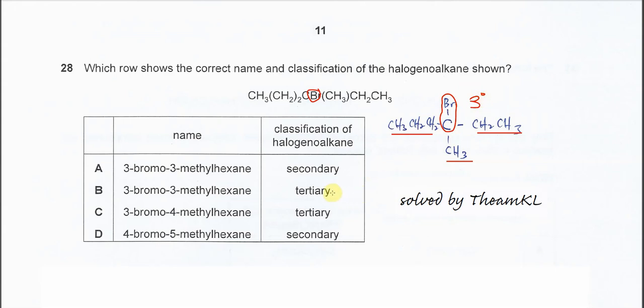The answer is either B or C, and now we need to find the correct name. We need to find the longest chain. The longest chain is one, two, three, four, five, six - this is the longest chain, six carbons.